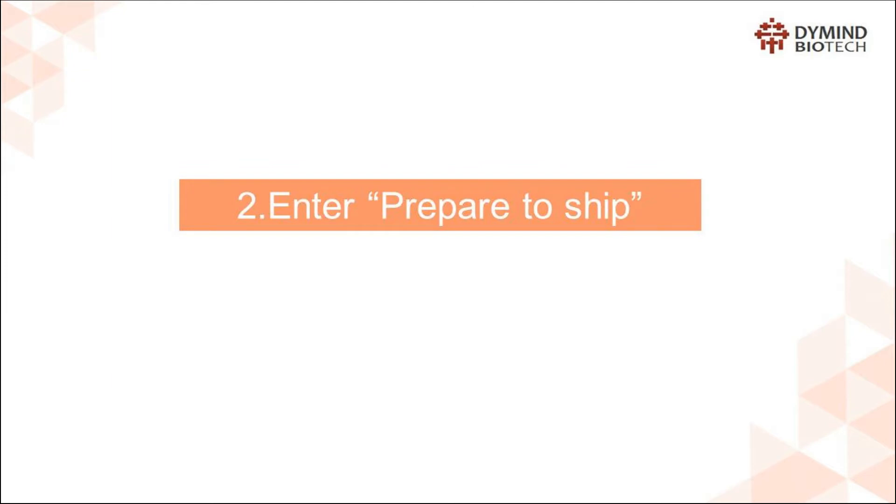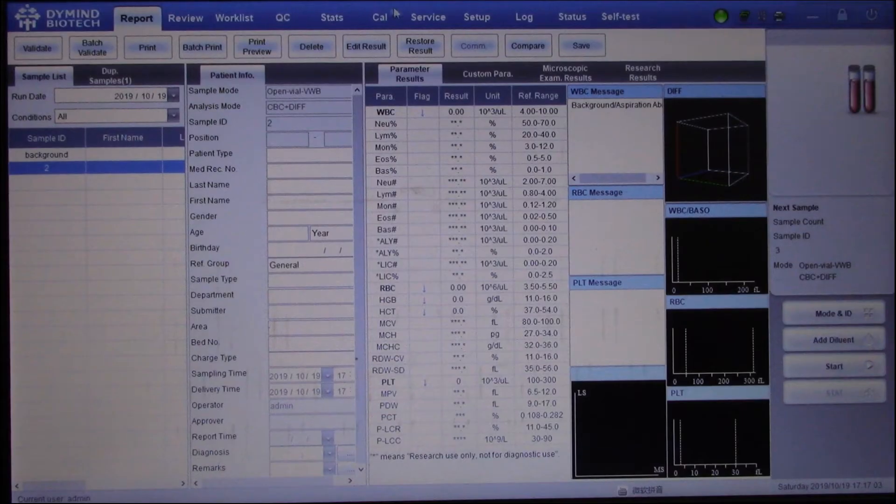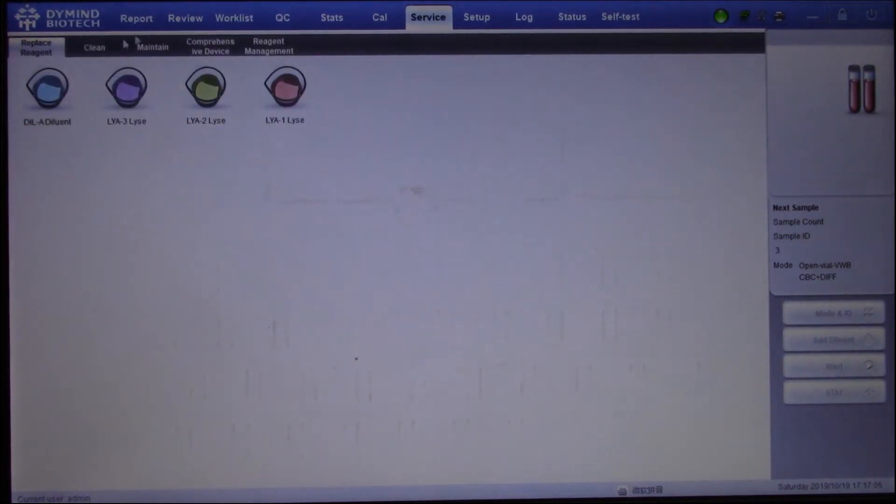Step 2: Enter Prepare to Ship. Click the service icon in the main menu. Then click Comprehensive Device in the Maintain icon. After that, click the icon of Prepare to Ship. Then click Yes to Start.